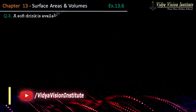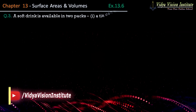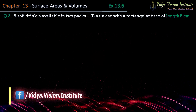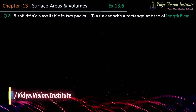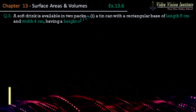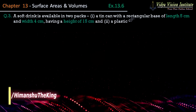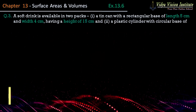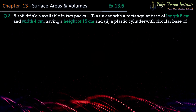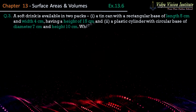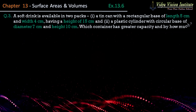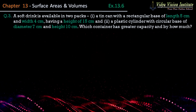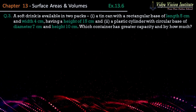Question no. 3: A soft drink is available in two packs — one, a tin can with a rectangular base of length 5 cm and width 4 cm having height 15 cm, and two, a plastic cylinder with circular base of diameter 7 cm and height 10 cm. Which container has greater capacity and by how much?